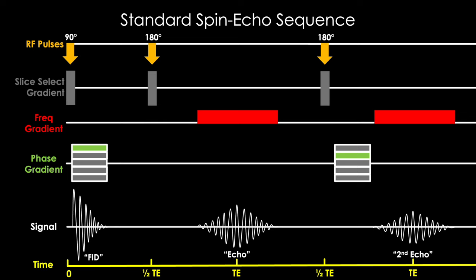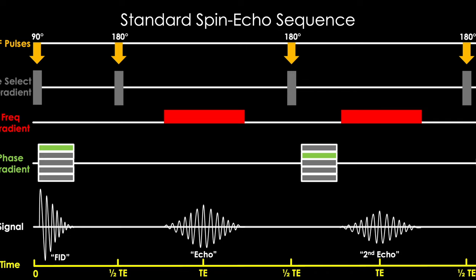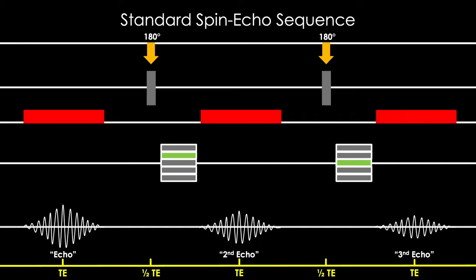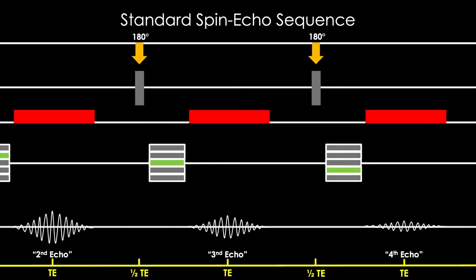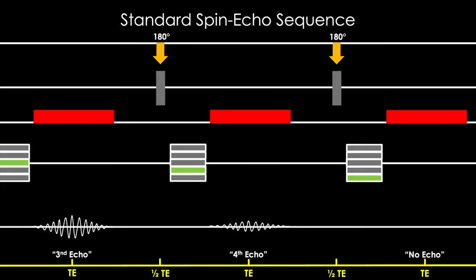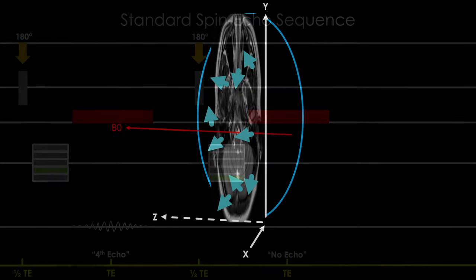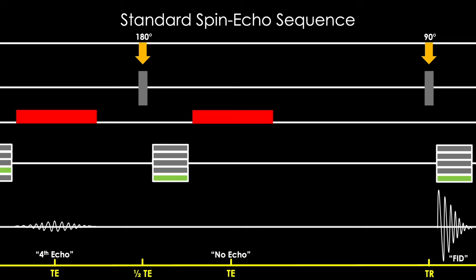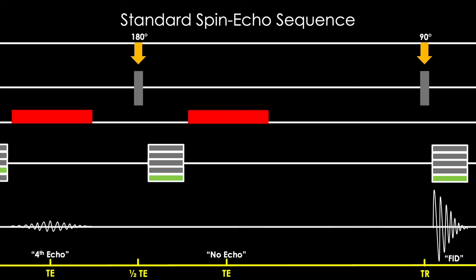After our second echo, we apply another 180 degree rephasing pulse at one half TE, apply our next phase encoding gradient, and record the signal from our third echo while applying our frequency encoding gradient. Our third echo is not as strong as our second — we're developing more and more disorder the further we push this. For a fourth attempt, the fourth echo is even weaker. Eventually we apply our next 180 degree rephasing pulse and phase encoding gradient, but we don't produce a detectable echo. At this point we need to do the big reset, waiting for a long time, allowing our protons to realign with the B0 Z axis, rebuilding our net magnetizations, so we can restart the process with our 90 degree pulse, which produces a free induction decay just as at the start of the sequence.